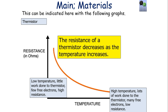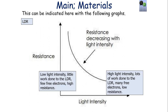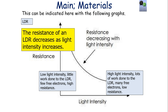So remember: the resistance of the thermistor decreases as the temperature increases. For an LDR it's the same pattern and trend, but now the x-axis is light intensity rather than temperature. At low light intensity, little work is done to the LDR, there are few free electrons and a high resistance. At high light intensity, lots of work is done to the LDR, lots of energy goes into it, so there are many free electrons and a low resistance. As light intensity increases, the resistance of an LDR decreases.